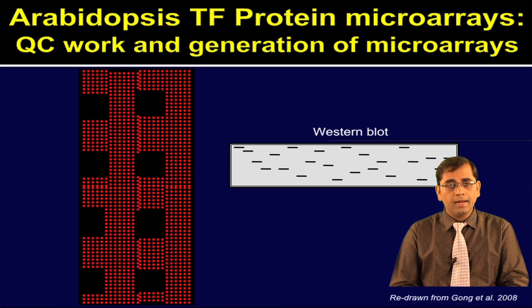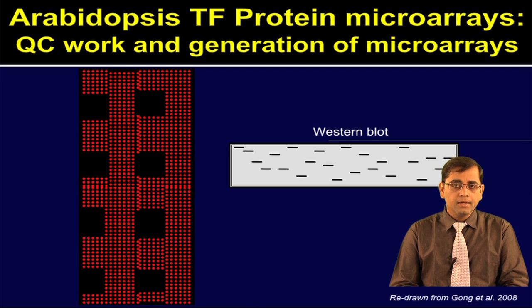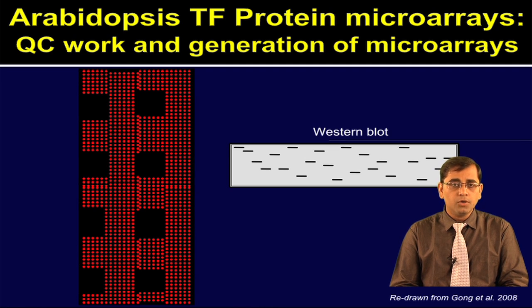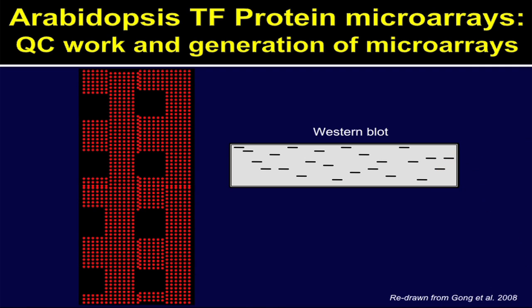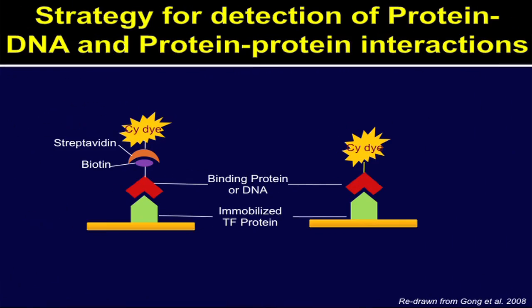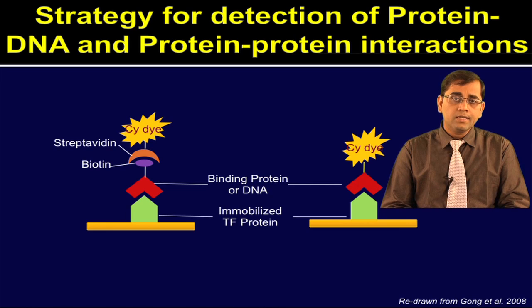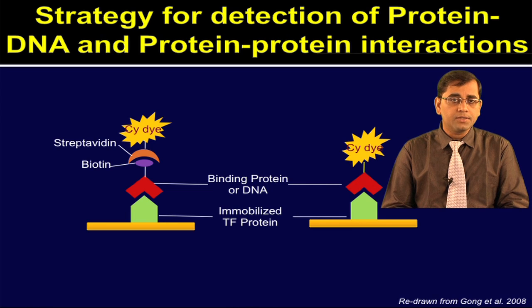Authors used anti-HIS antibody because all of these clones contain a HIS tag, and the right side shows the western blot image, because authors wanted to first quality control each of the clones expressing the proteins. In this study, authors first defined the study for the detection of protein-protein and protein-DNA interaction.